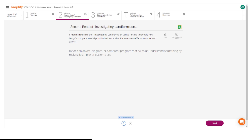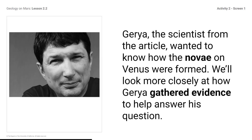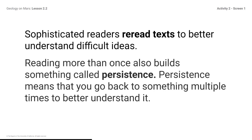Here's what your student screen looks like for this part of the lesson. Gurria, the scientist from the article, wanted to know how the novae on Venus were formed. We'll look more closely at how Gurria gathered evidence to help answer his question.